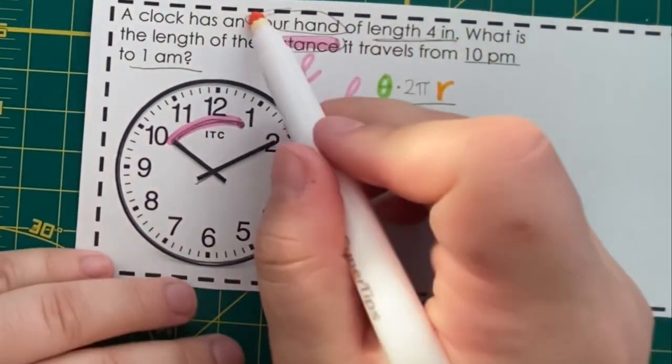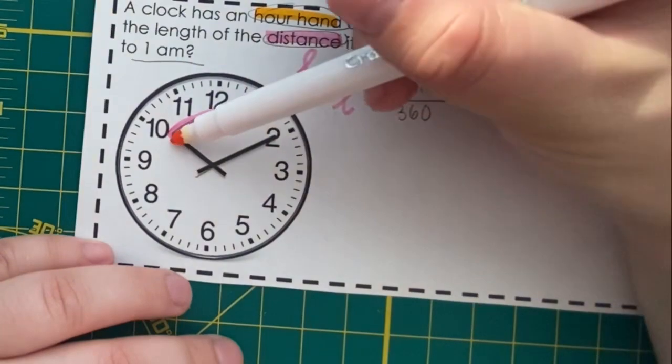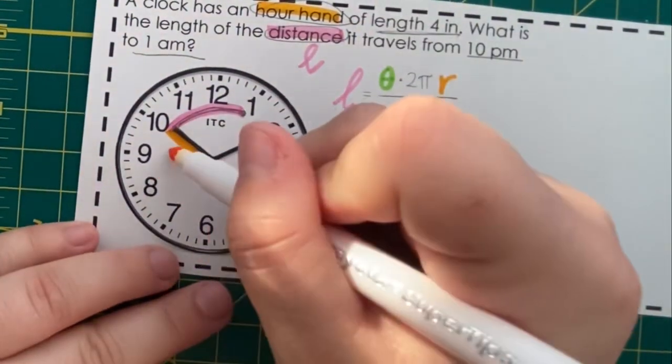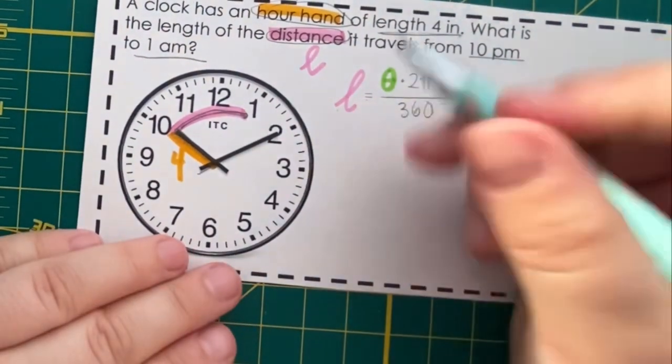Well, if we're talking about the length of the hour hand, that is our radius. So, our radius is 4.